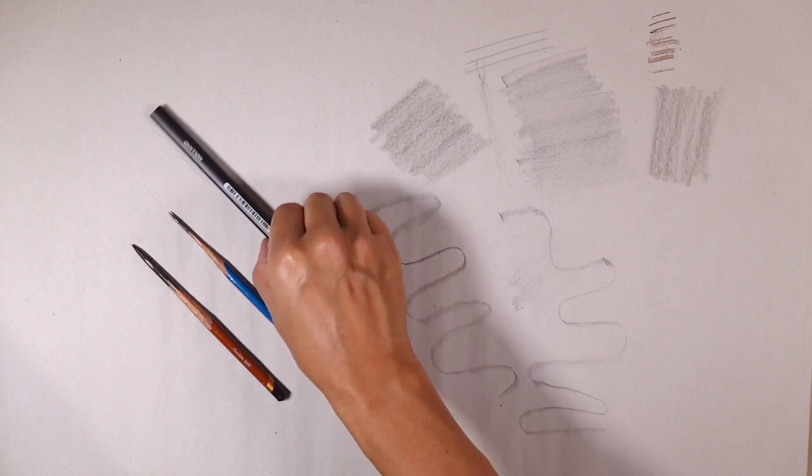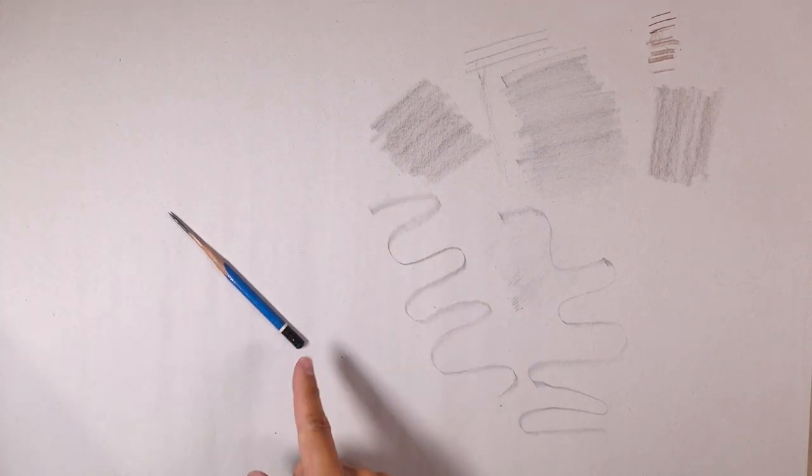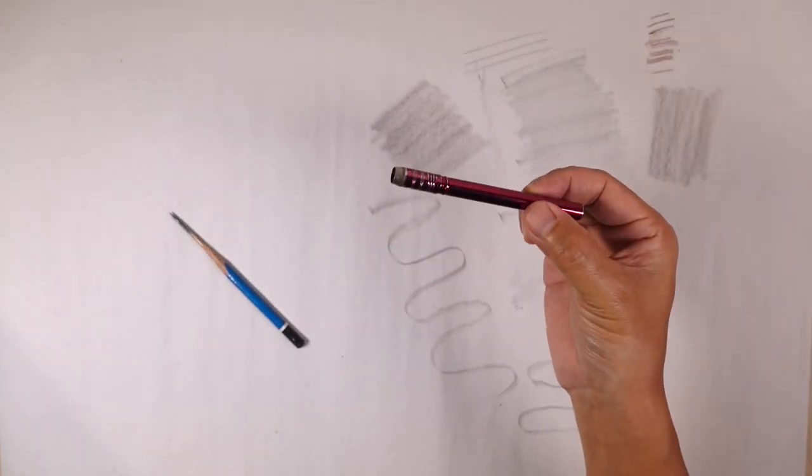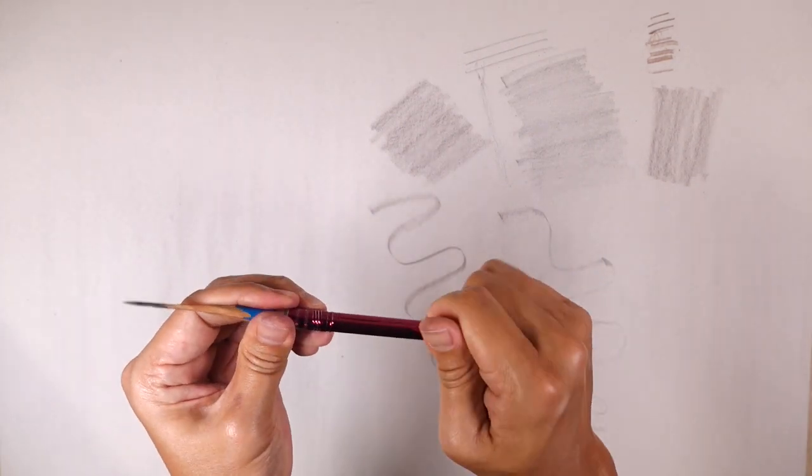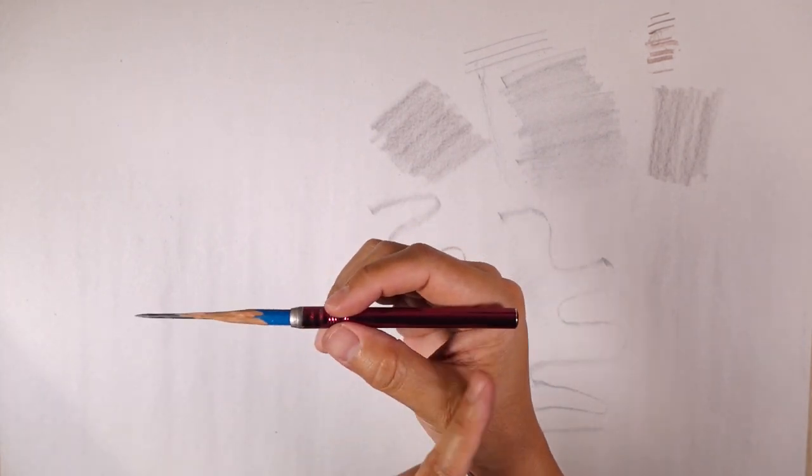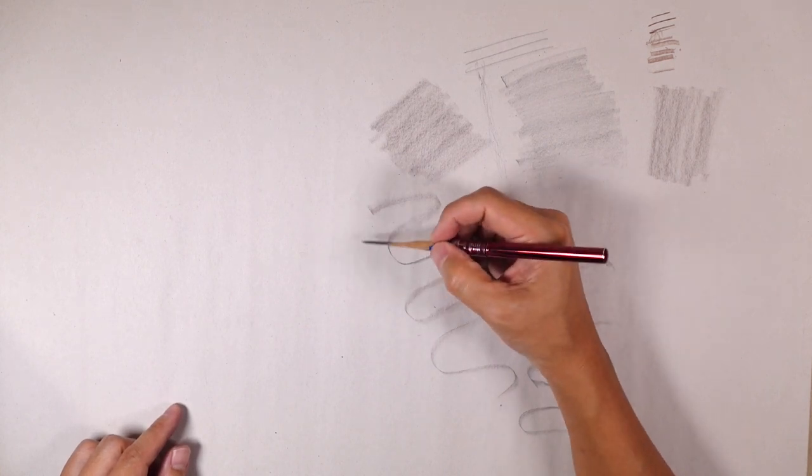Also to note, if your pencil gets too short like this one over here, you might want to introduce a pencil extender to it. All you have to do is just put the pencil in there, twist it and you've got more grip, more surface area to grip your pencil, especially when you're doing details.